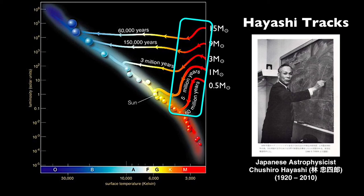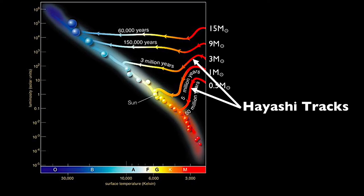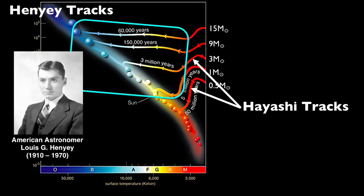The other trend is the tendency of larger-mass stars to continue heating up at a steady rate as they approach the main sequence. This horizontal portion of the pre-main sequence evolutionary path is called the Henyey track, named after Hungarian-American astronomer Louis Henyey.